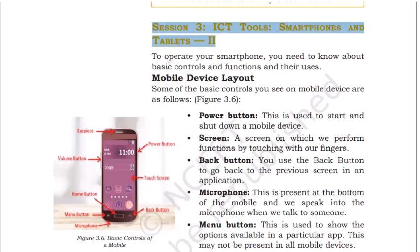Now let's start session three: ICT Tools — smartphones and tablets, part two. We are going to go a bit deeper about mobile devices and tablets. Mobile device design has not really changed in the last ten years. You can observe that size may become smaller, wider, or longer, but the design remains the same — except for the flip phone which is coming back. On a mobile device, you can see a power button, screen, back button, microphone, menu button. The power button helps to start and shut down the device.